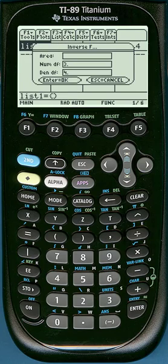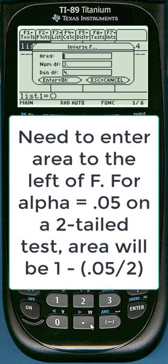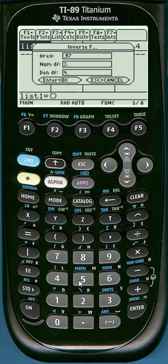TI calculators always expect us to enter area to the left. This is a two-tailed test at a significance level of five percent, which means two and a half percent of area is in the upper tail. If we want to know that upper tail F critical value, we'll take 1 minus the area to the right of it, which will give us 0.975 as the area to the left of it.